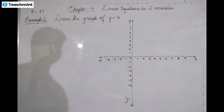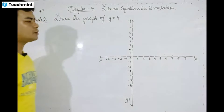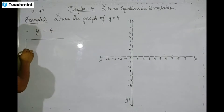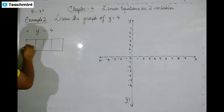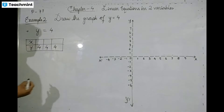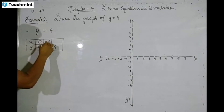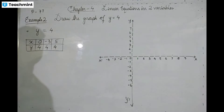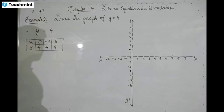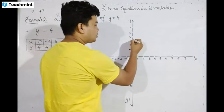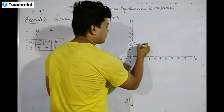Example number two: draw the graph of y equal to 4. The graph of y equal to 4 means that no matter what x is, y is always equal to 4. So when x equals 0, y is equal to 4.